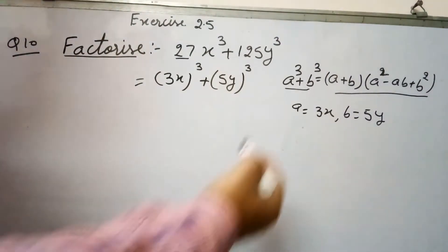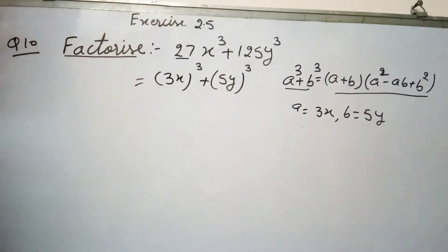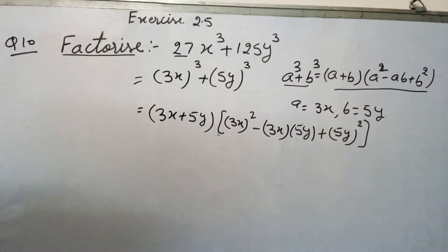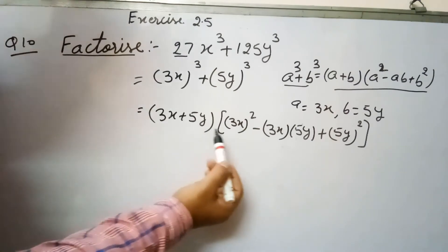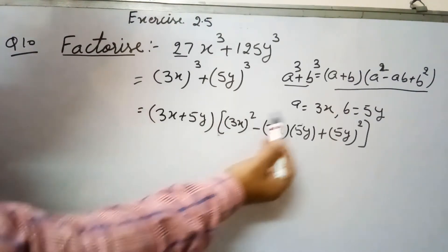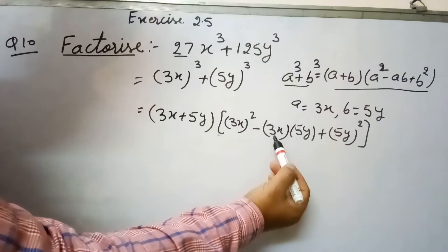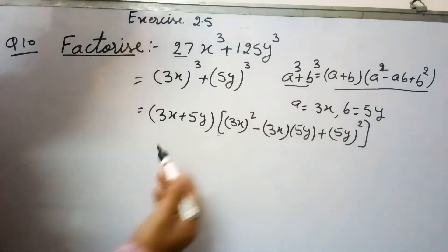So according to this identity, the factors of this will be (3x + 5y)((3x)² - (3x)(5y) + (5y)²).